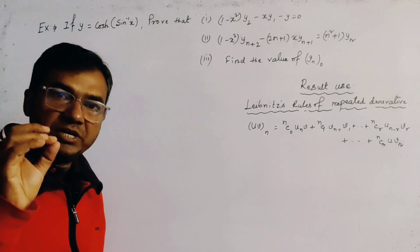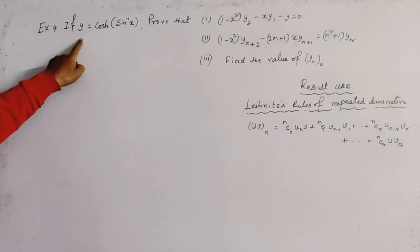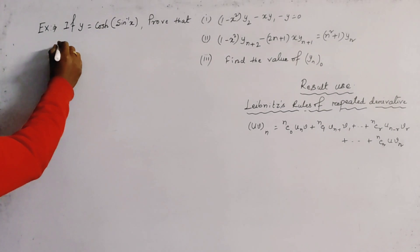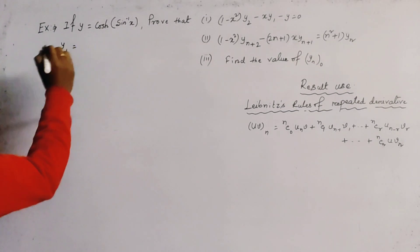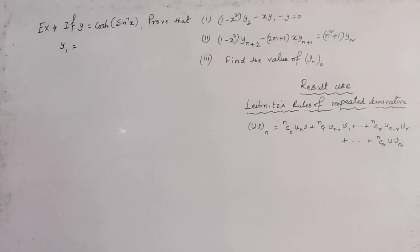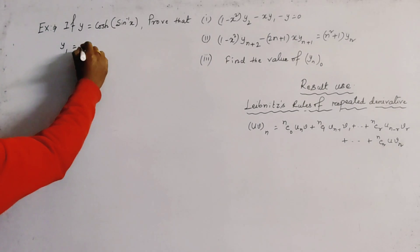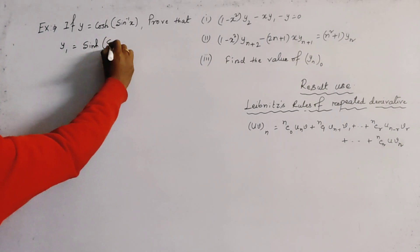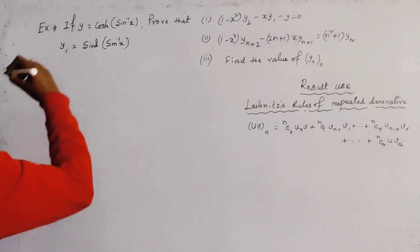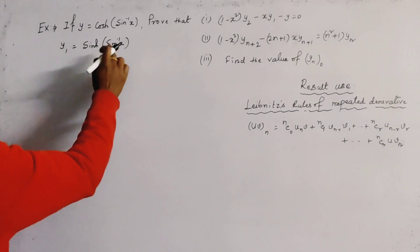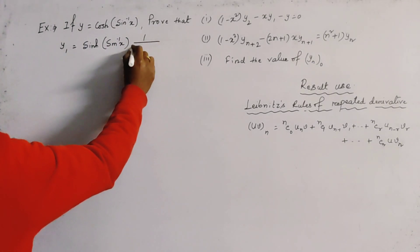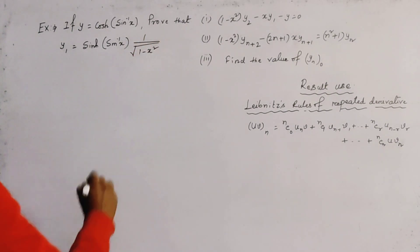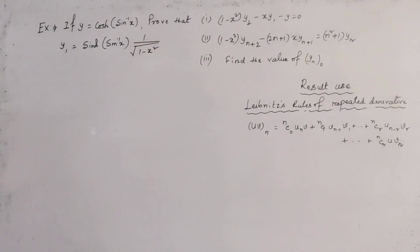We first differentiate the given y with respect to x, getting the value of y₁. This equals the derivative of cosh, which is sinh of sine inverse x, multiplied by the derivative of sine inverse x, which equals 1 divided by the square root of (1 minus x squared). This is the first derivative.